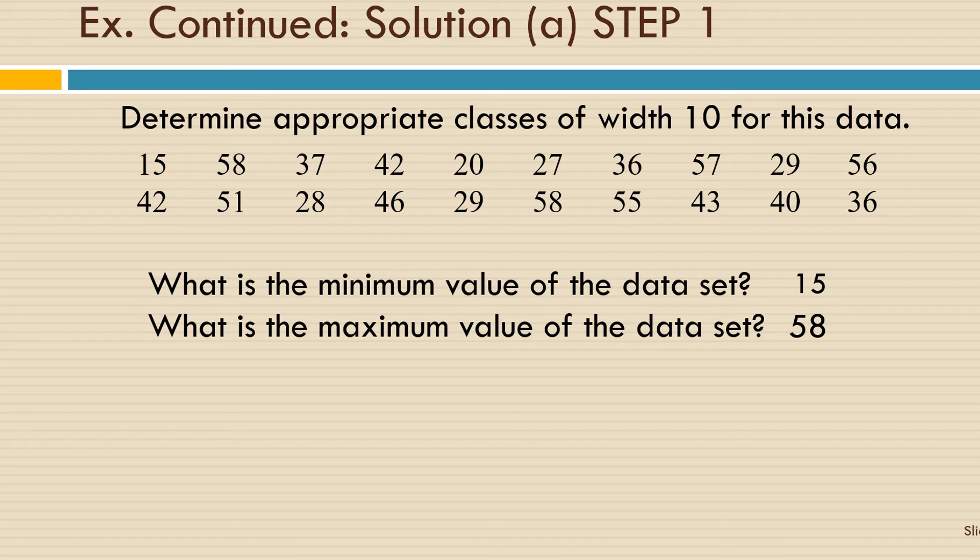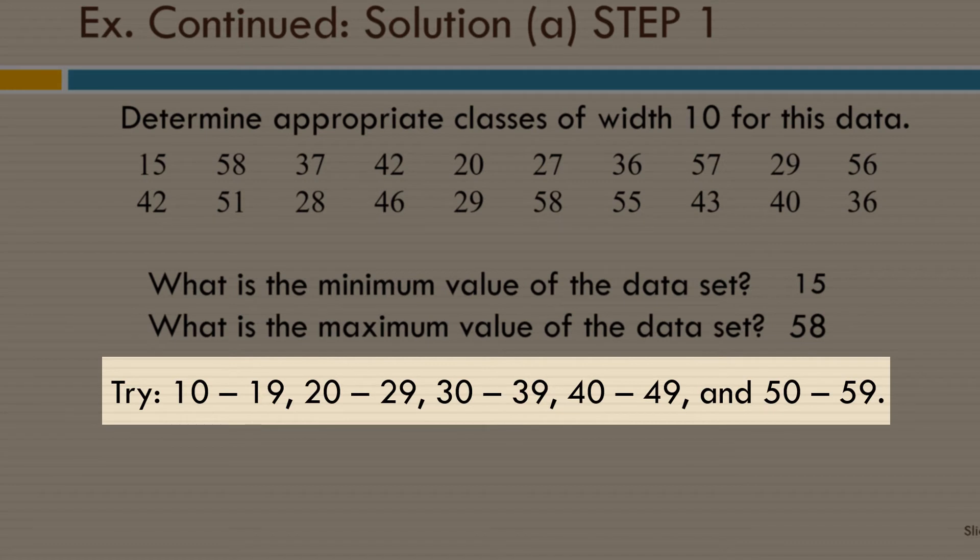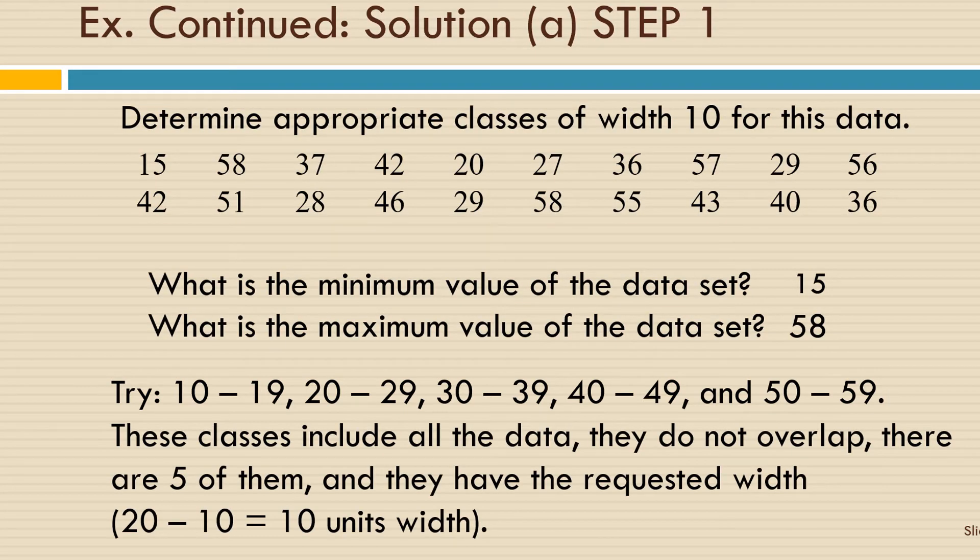So our classes could start at 15, or they could start at any number less than 15. Since counting by 10s is easier, we could try starting each category at a multiple of 10: 10 to 19, 20 to 29, 30 to 39. In order to hit 58, we would have to go all the way up to 50 to 59. This would be exactly five classes. And remember, we need between 5 and 12 classes. So that will work. These classes include all the data, they don't overlap, there are five of them, and they have the requested width. 20 minus 10 is 10, so the class width is 10.